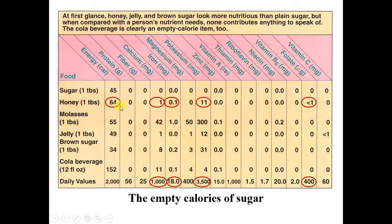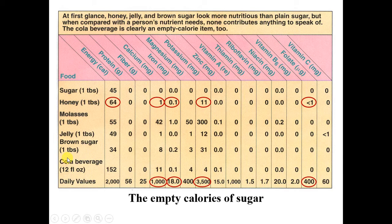Honey might have a few more antioxidants due to its production by bees, but it is not packed with antioxidants — it needs to be counted as added sugar. Brown sugar is essentially white sugar sprayed with molasses, so no healthier for you. Raw sugar is added sugar. Molasses is the only one that comes with some significant nutrient values. For the most part, any added nutritive sweetener needs to be counted as an added sugar and has the associated health impact.